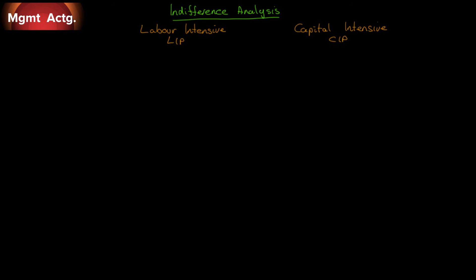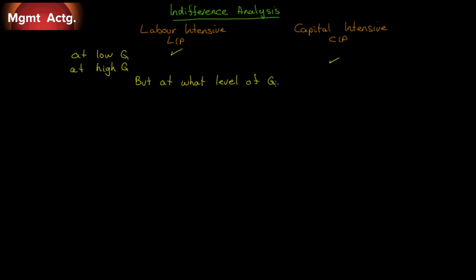We engage in something called an indifference analysis. This is the point at which it doesn't matter if we're capital-intensive or labor-intensive — we are indifferent between the two. At low levels of volume, we'd prefer to be labor-intensive; at high levels, we want to be capital-intensive. If volume will be really big, we want higher fixed costs and lower variable costs. If volume will be low, we want low fixed costs and accept the high variable costs.